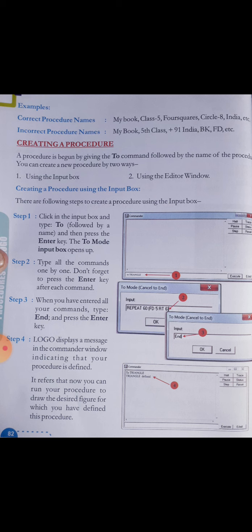Step three — when you have entered all your commands, type 'end' and press the Enter key. Step four — Logo displays a message in the commander window indicating that your procedure is defined. This means that now you can run your procedure to draw the desired figure for which you have defined this procedure.